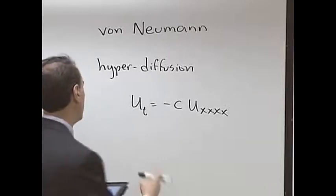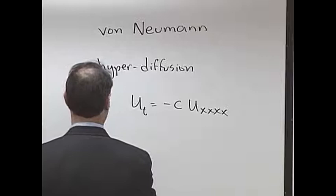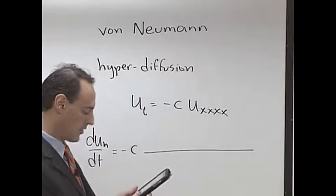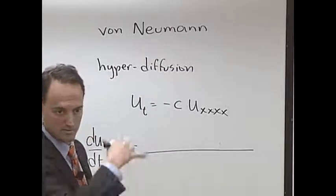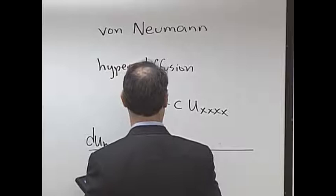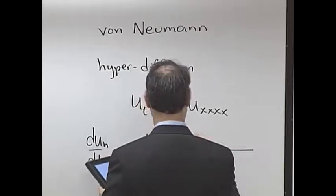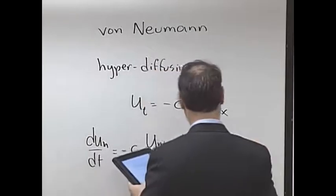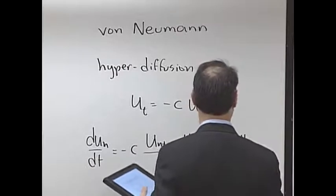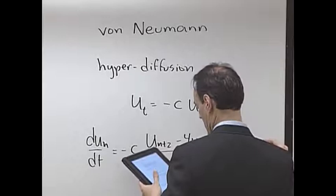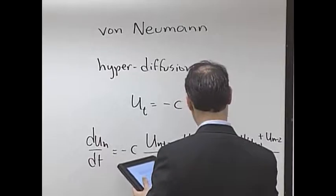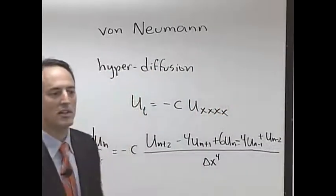What I'm going to do is discretize. So first, let's discretize spatially. So you can say the du/dt is equal to minus C times the fourth derivative. I give this to you in one of your tables earlier on. Here's what it looks like: u_n+2 minus 4u_n+1 plus 6u_n minus 4u_n-1 plus u_n-2 all over Δx to the 4.